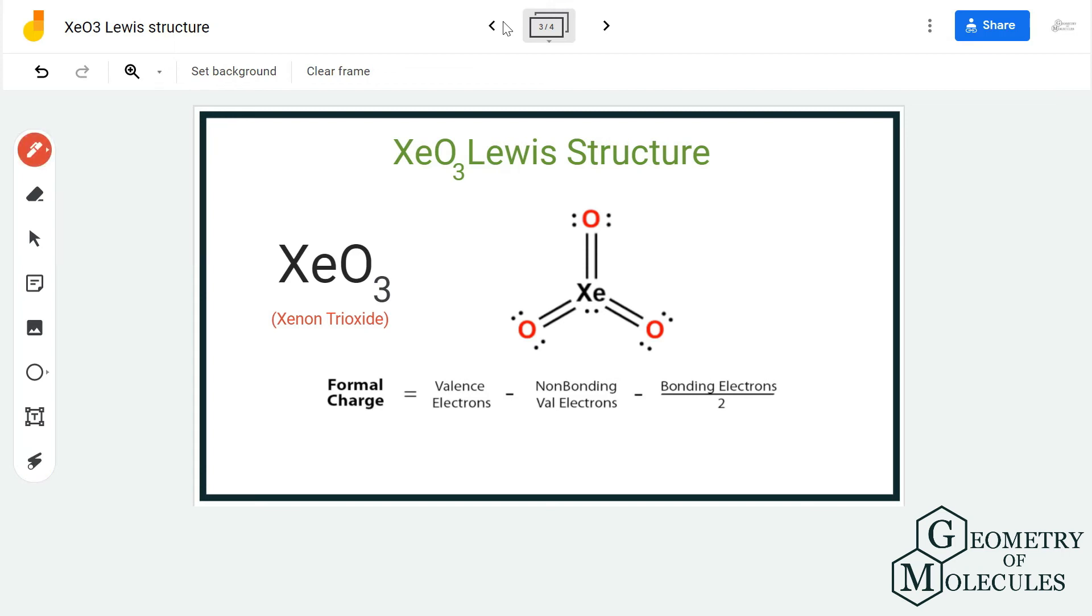After that, you can also calculate the formal charges to check if this is the correct structure for xenon trioxide. Now oxygen has six valence electrons, out of which four are non-bonding and four are bonding, giving it a total charge of zero. Xenon has eight valence electrons, two non-bonding electrons, and twelve bonding electrons, which gives us a total charge of zero.